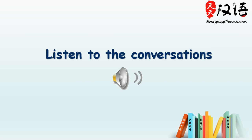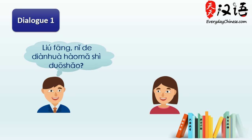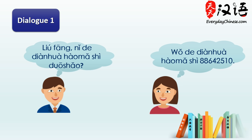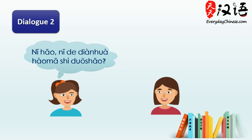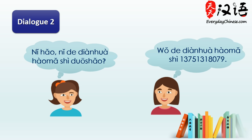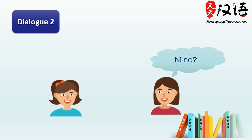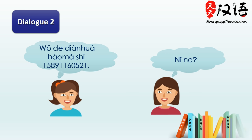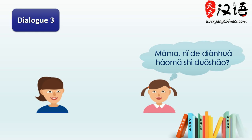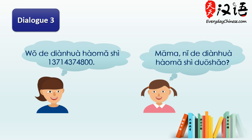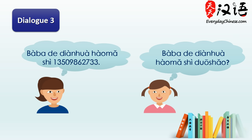Now let's listen to the conversations one more time. 刘芳,你的电话号码是多少? 我的电话号码是88642510. 张静的电话号码是多少? 他的电话号码是53648927. 你好,你的电话号码是多少? 我的电话号码是13751318079. 你呢? 我的电话号码是15891160521. 妈妈,你的电话号码是多少? 我的电话号码是13714374800. 爸爸的电话号码是13509862733.